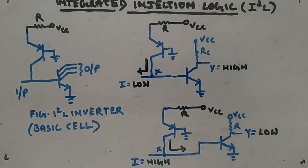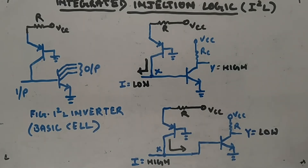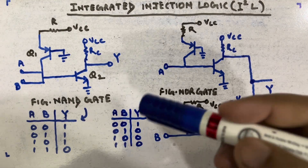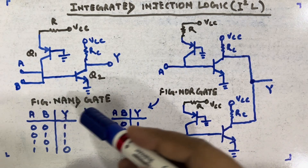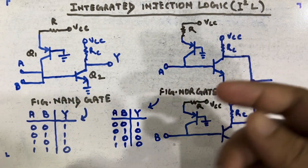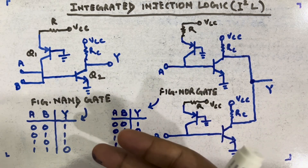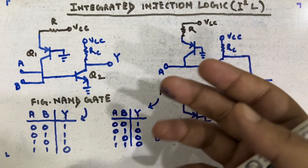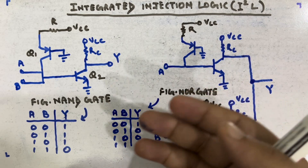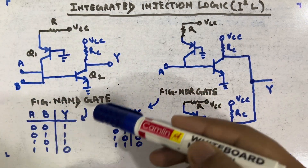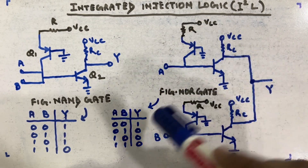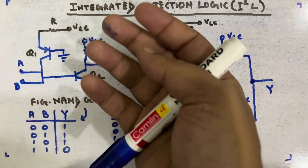To design other gates you need universal gates. I will show you how to get universal gates from this, and once you have them, you can design any other gate. Let me show you how to make a NOR gate and a NAND gate, which are universal circuits. Here I have made two basic gates — a NAND gate with its truth table and a NOR gate with its truth table.